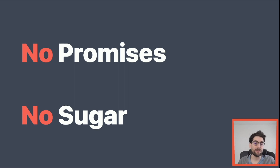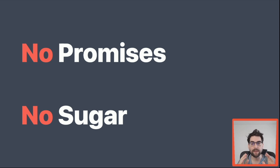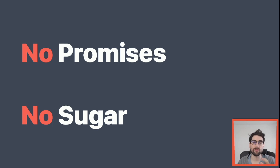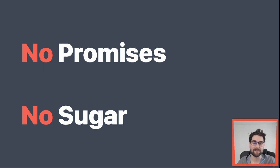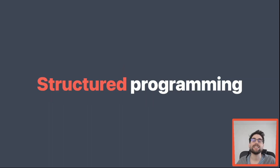I recommend you forget about everything you know about asynchrony using promises, futures, or other systems in other languages, and come with an open mind. If you understand structured concurrency and all the impact and reasons it has to exist, you'll understand much better how to work with Swift concurrency. So what is structured concurrency anyway? As any good story, we first need to talk about what came before it, and that's structured programming — nothing about asynchrony, just synchronous programming but in a structured way.